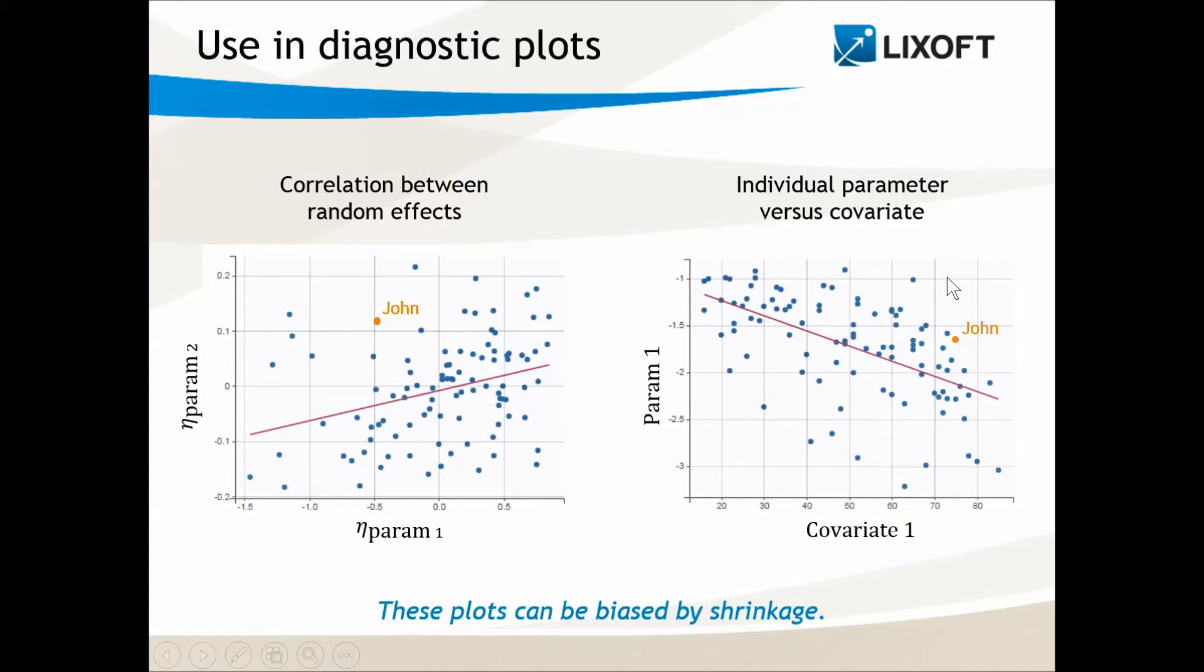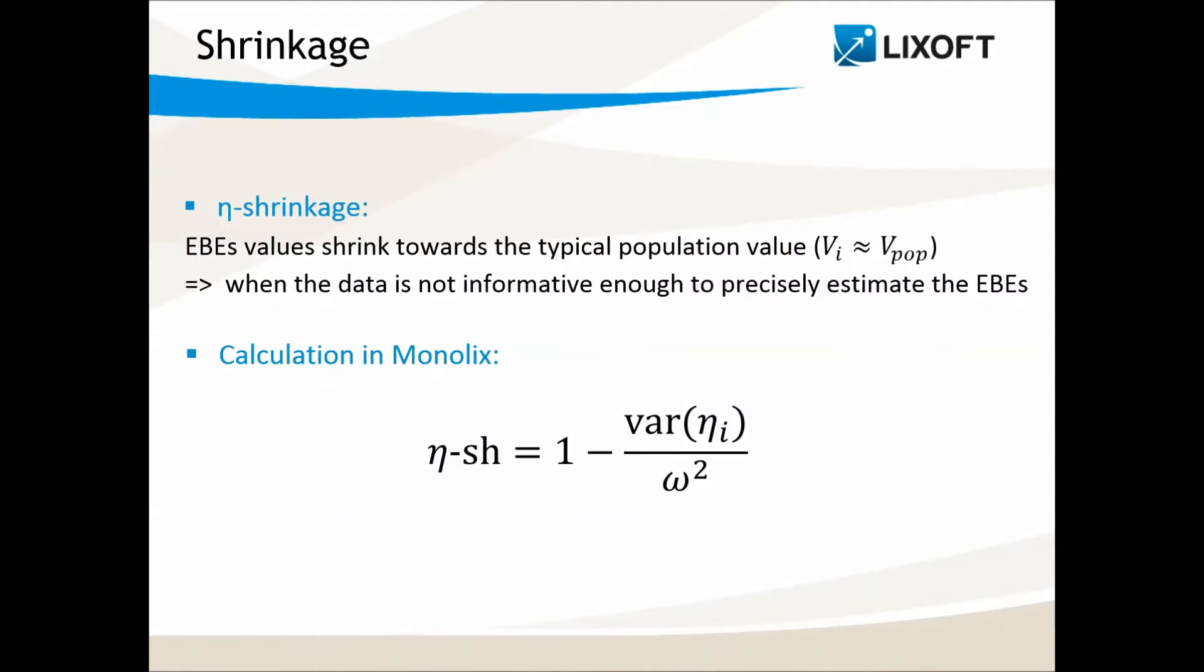But these values have a big problem. They can be affected by shrinkage. Shrinkage means that the EBE's values shrink towards the typical population value. It happens when the data is not informative enough to precisely estimate the EBEs. In Monolix, the shrinkage is calculated in the following way.